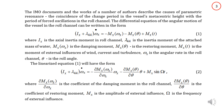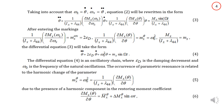Looking at the transition, equation 1 will have the form of equation 2. Taking into account that omega x is the first derivative of the roll angle theta, and the angular acceleration in the roll channel is the second derivative of the roll angle theta, equation 2 will be rewritten in the form of equation 3. After entering the markings, differential equation 3 will take the form of equation 4.